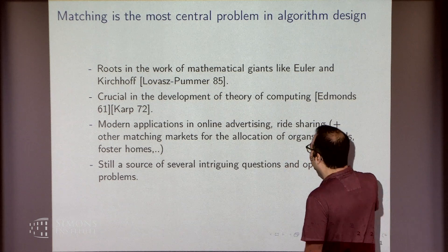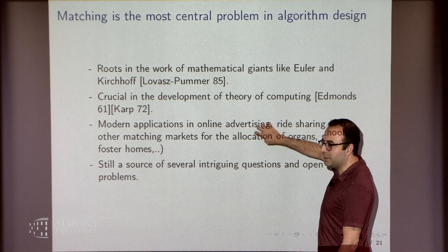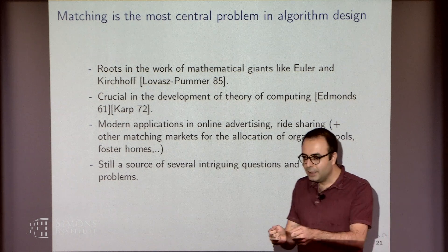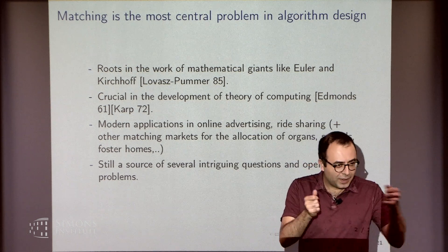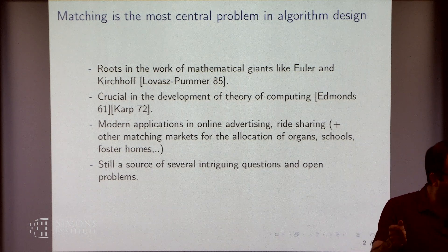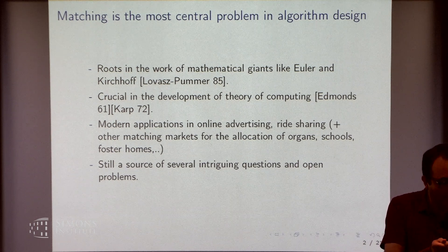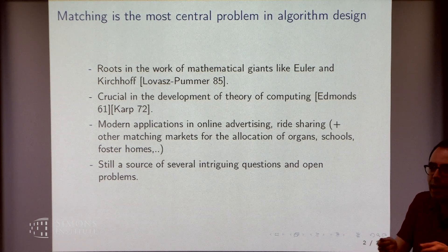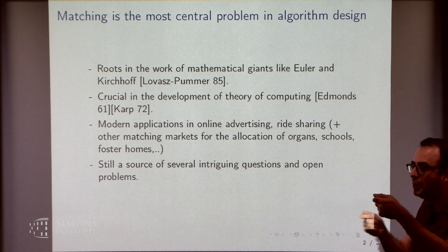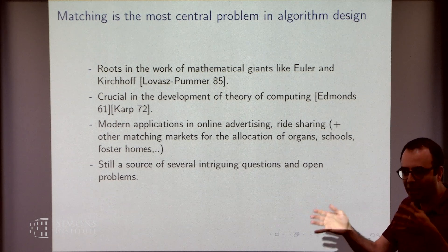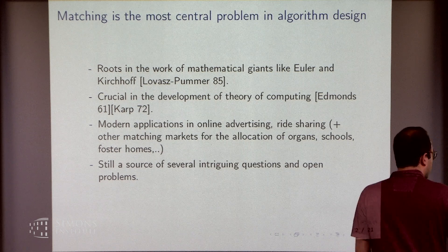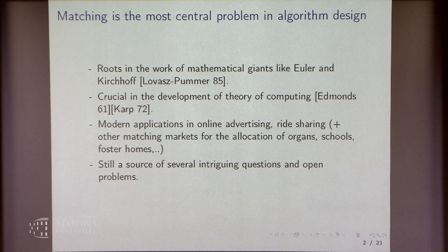One of the interesting aspects of these markets is that they are dynamic, in the sense that the matching we need to find — the graph — is not given to us in one shot. We get it in bits and pieces. We have to make decisions about who to match to whom with partial information about the future, and that makes the problem quite difficult.